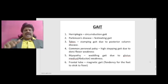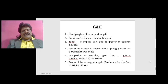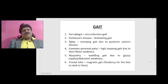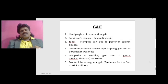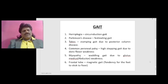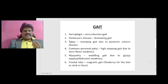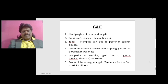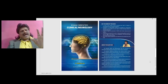Finally, there is frontal lobe gait — also called magnetic gait. Patients have a tendency for their feet to stick to the floor. On a bed they can move the lower limbs, but when asked to walk on the floor they cannot — they feel as if their limbs are stuck to the floor. This is known as magnetic gait, seen in frontal lobe disease. So the various gaits are: circumduction gait in hemiplegia, festinant gait in Parkinson's disease, stamping gait in tabes dorsalis, high stepping gait in common peroneal nerve palsy, waddling gait due to gluteus medius weakness, and magnetic gait in frontal lobe pathology.